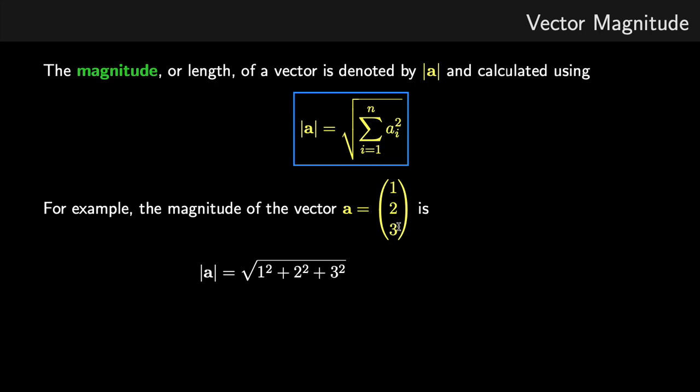So for our vector A, with elements 1, 2, and 3, the magnitude of A is the square root of 1 squared plus 2 squared plus 3 squared. And we've evaluated that, we can see the magnitude is square root of 14. So this is the length of that vector A.